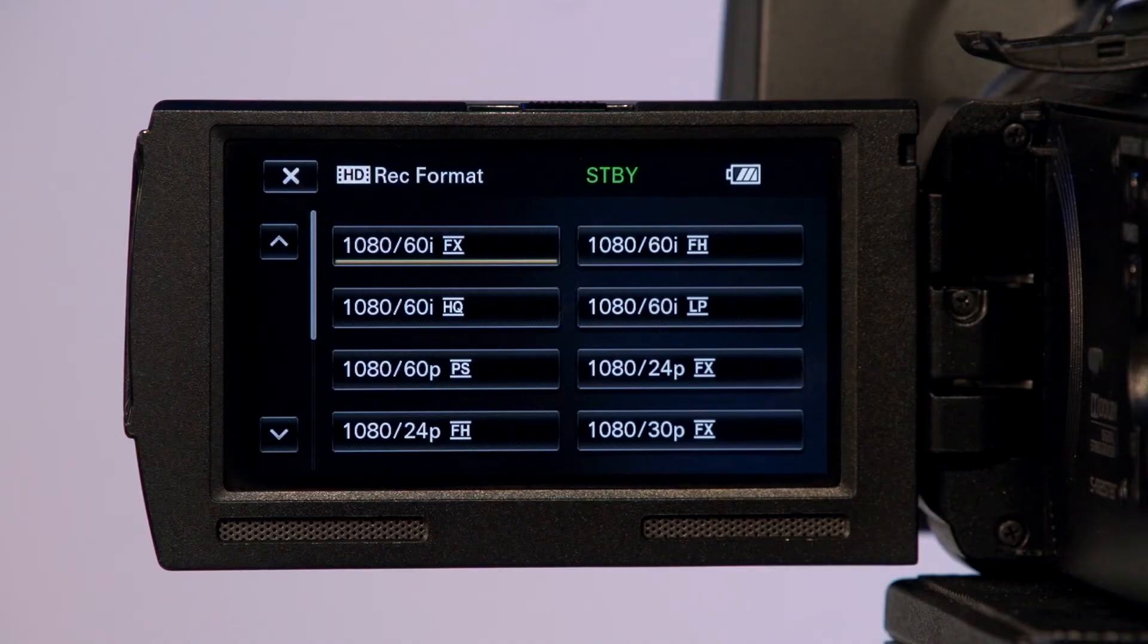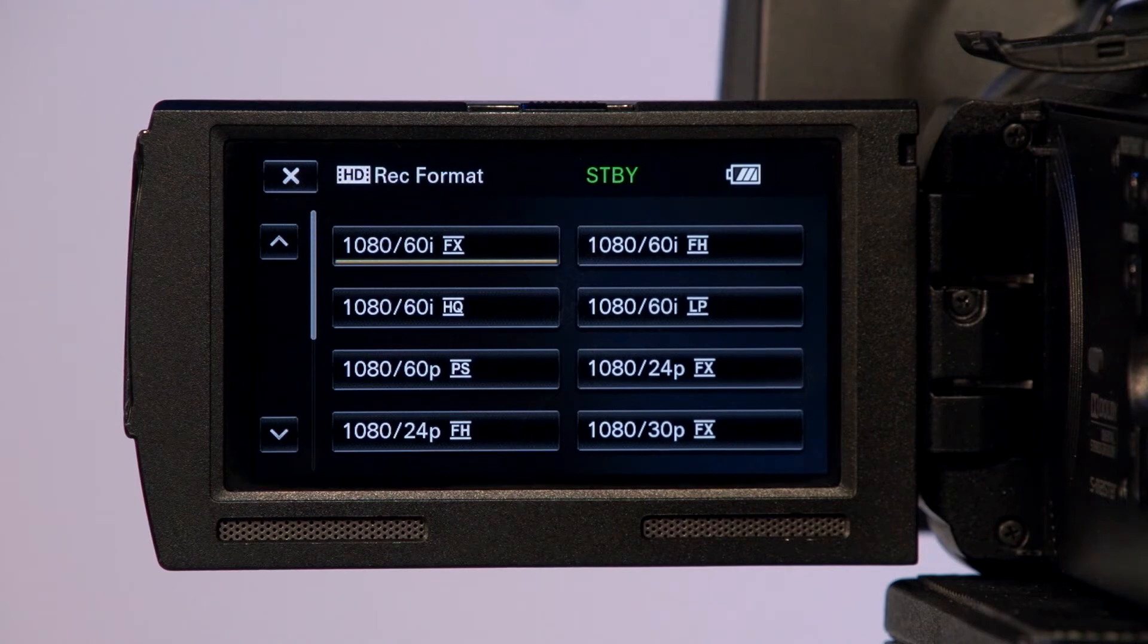The camera can shoot in a choice of two qualities of 1080-60i, 1080-30p, and even 1080-24p for capturing a more filmic look. The NX30 can even shoot in 1080-60p, which, when slowed down in post-production editing, can yield extremely clean slow-motion clips.